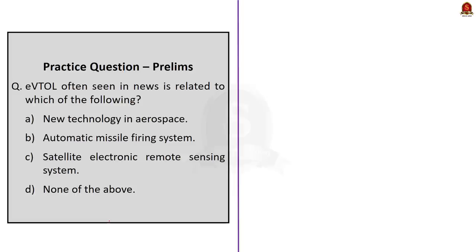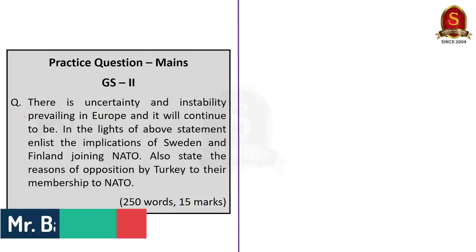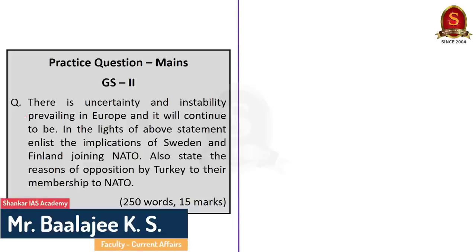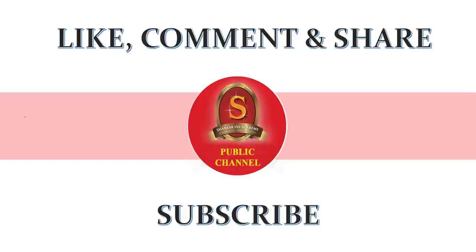The fourth question: EVTOL, often seen in news, is related to which of the following? Option A — new technology in aerospace; Option B — automatic missile firing system; Option C — satellite electronic remote sensing system; Option D — none of the above. This is straightforward: eVTOL stands for electric vertical takeoff and landing aircraft, a new technology in aerospace. So the correct answer is option A. The mains question based on today's discussion is displayed here — interested aspirants can write answers and post in the comment section. If you found today's discussion useful, like, comment, and share with your friends. Subscribe to Shankar IAS Academy YouTube channel for more UPSC preparation updates. Thank you.